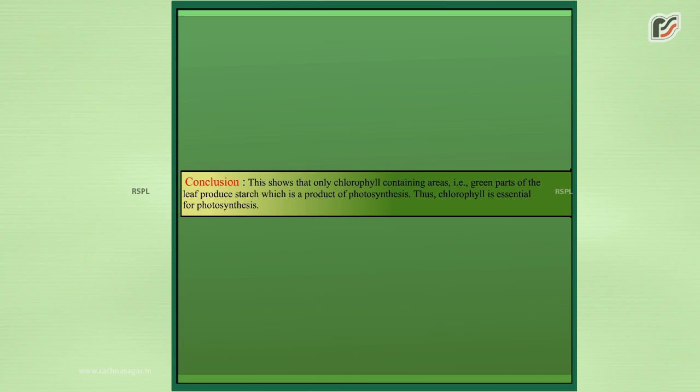Conclusion: This shows that only chlorophyll containing areas, i.e., green parts of the leaf produce starch which is a product of photosynthesis. Thus chlorophyll is essential for photosynthesis.